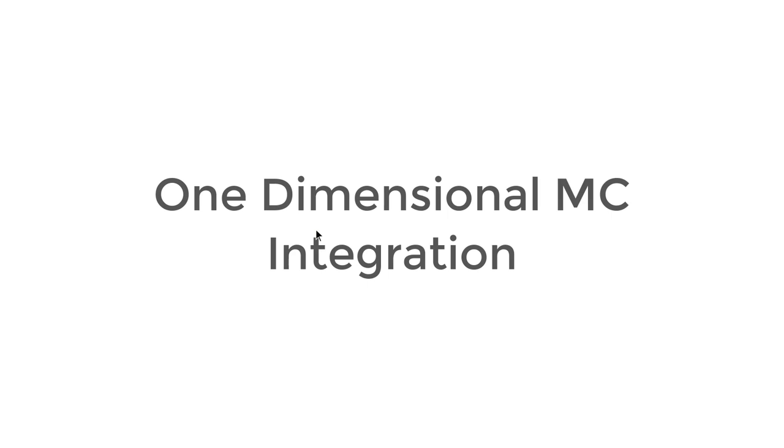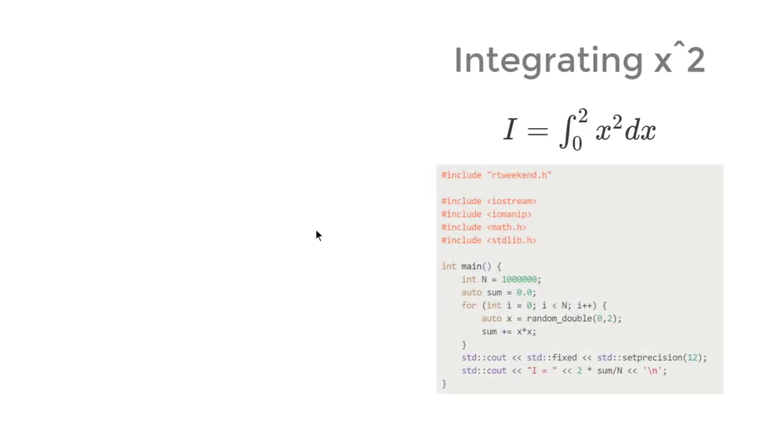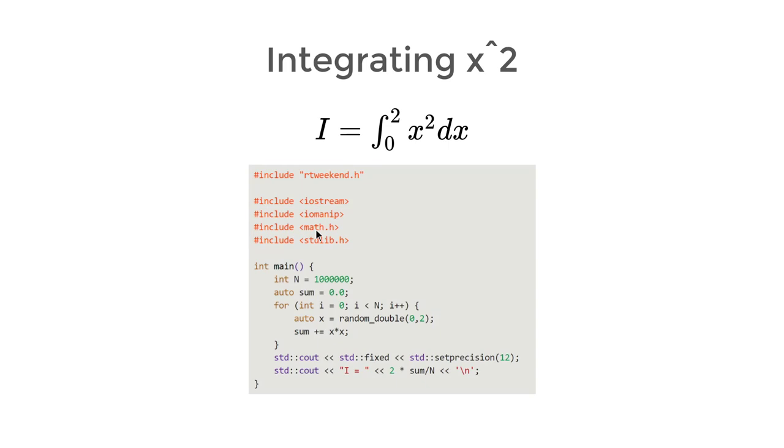The second thing we talk about in this book is one-dimensional Monte Carlo integration. Integration is all about computing areas and volumes. We could have framed our previous pi estimation with integration. Sometimes it is really hard to describe a problem without integration, but we will first study simple integration that we know the analytic solution.